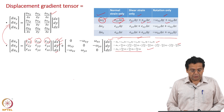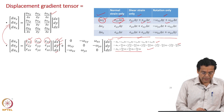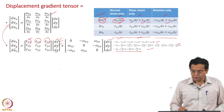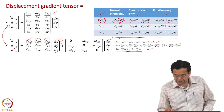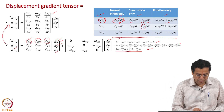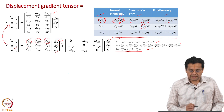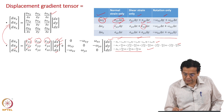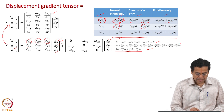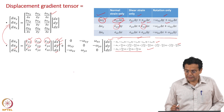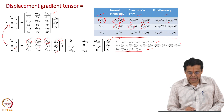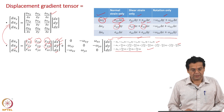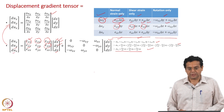Similarly for the y-direction: the dx contribution comes from shear strain, so the first term is epsilon_xy. The second term comes from normal strain along y, which is epsilon_yy. The third term comes from shear strain contribution: epsilon_yz times dz. Likewise you can complete for the z-direction as well.